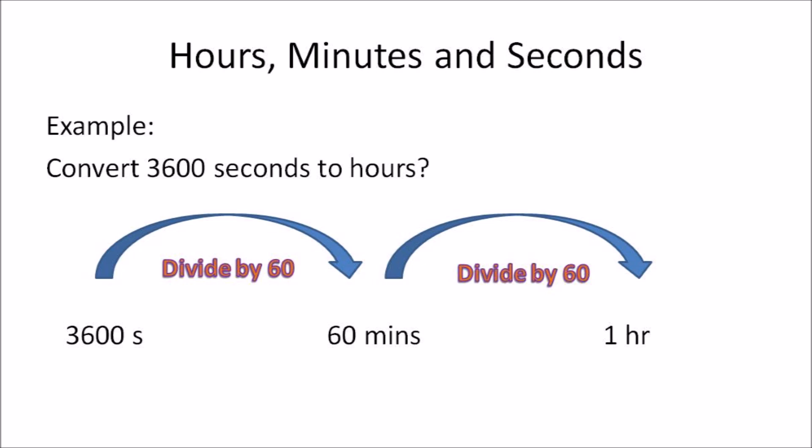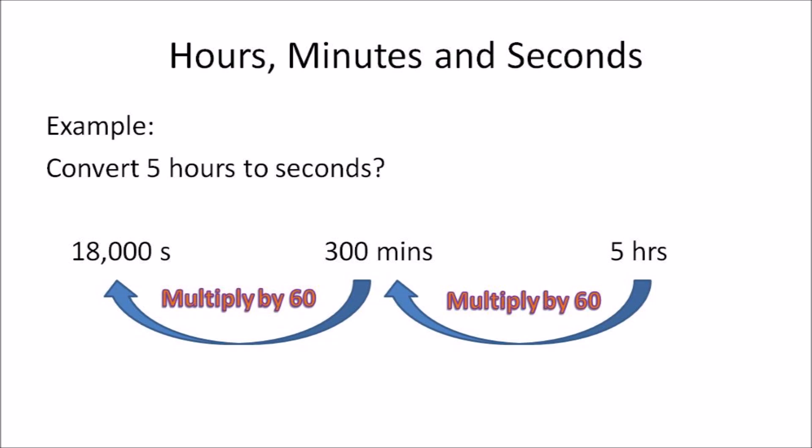In this example: convert 3600 seconds to hours. In order to convert seconds to hours, you first need to divide by 60 to get minutes, and then divide by 60 again to get hours. So 3600 seconds divided by 60 gives you 60 minutes, and then 60 minutes divided by 60 gives you one hour.